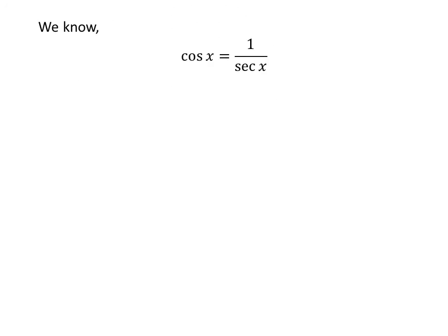We also know that 1 upon secant of x is equal to cosine of x. So cosine of x is equal to 1 upon minus 13 upon 12, which equals minus 12 upon 13.